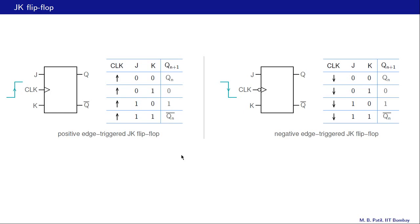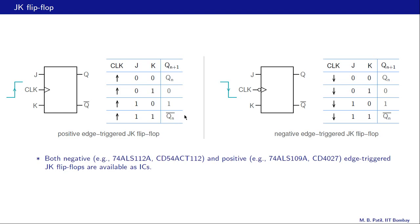JK flip flops can be made as either positive edge triggered or negative edge triggered flip flops. The transition table for a negative edge triggered flip flop uses a negative-going clock edge as the active edge, while for a positive edge triggered flip flop the active edge is a positive-going clock edge. Otherwise the entries are identical. Commercially, both types are available as ICs.